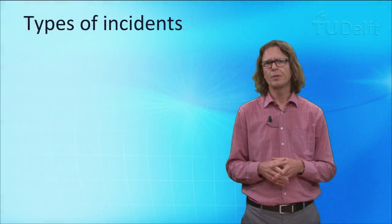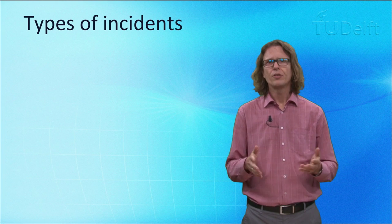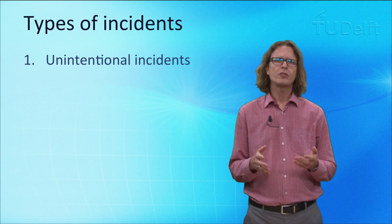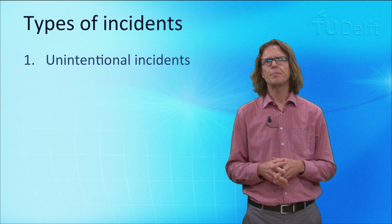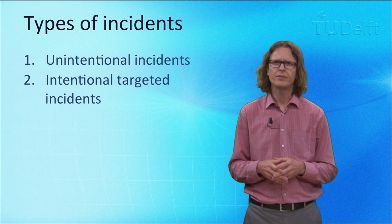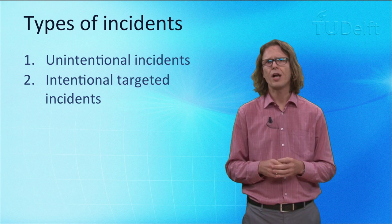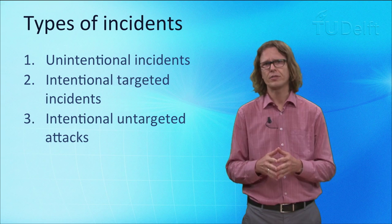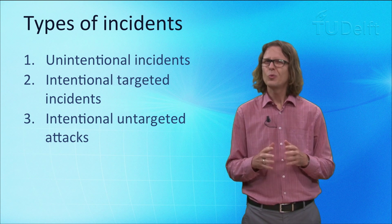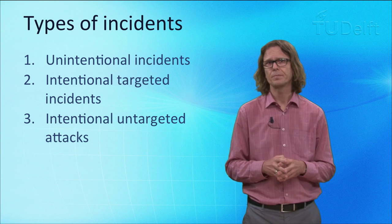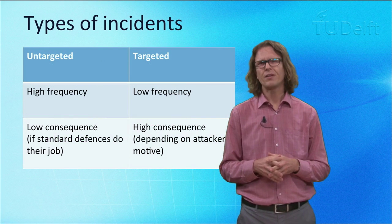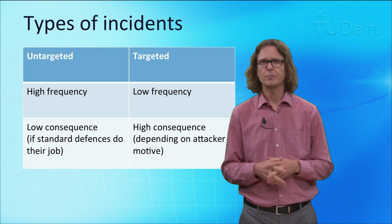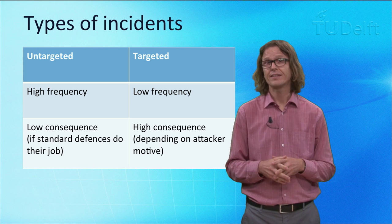To better understand the problem, it is useful to distinguish three types of incidents. The first is unintentional incidents — in other words, accidents: disruptions caused by failures in software or hardware. The second type is intentional targeted attacks, where a human attacker purposefully tries to compromise the security of some system or set of systems. And the third type is intentional untargeted attacks, where the incident is caused by a human attacker who is not targeting the infrastructure system specifically. The difference between targeted and non-targeted attacks is an important distinction in cyber security, because there are many non-targeted attacks that create a lot of damage.